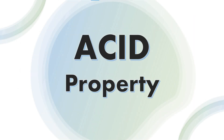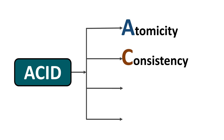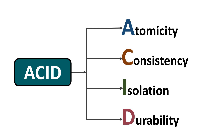Let's get a brief introduction about the ACID properties. In ACID: A stands for Atomicity, C stands for Consistency, I stands for Isolation, and D stands for Durability.